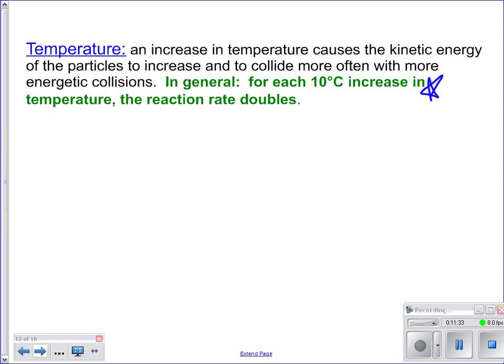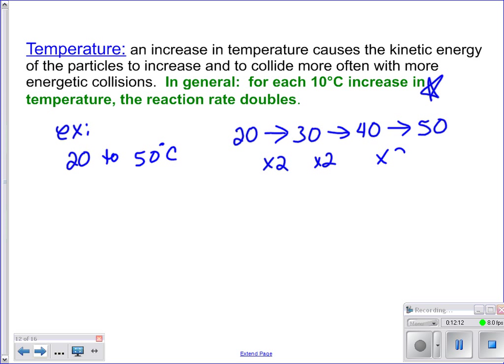And one thing to remember here, this is an important one you might want to put a star by, is that for each 10 degrees increase in temperature, this is just a rule of thumb. So it holds pretty true for most substances. For each 10 degrees Celsius increase in temperature, the reaction rate doubles. So let's do an example. Let's say you increase the temperature of something from 20 to 50 degrees Celsius. What that means is going from 20 to 30 degrees Celsius, it's doubled. And going from 30 to 40, it's doubled. Going from 40 to 50, it is doubled. So how many times faster is that? Two to the third. Eight times faster.